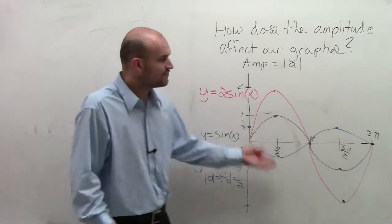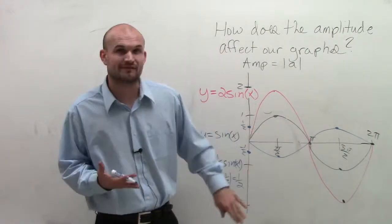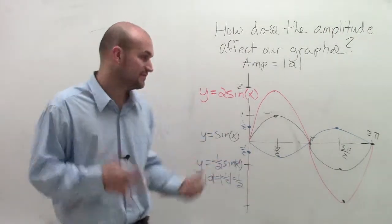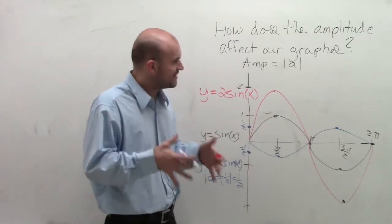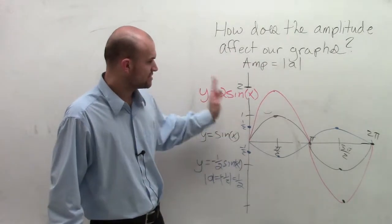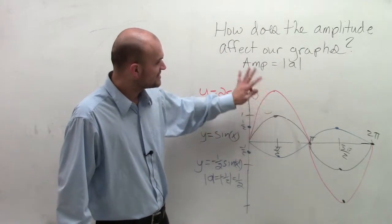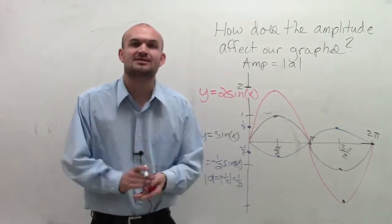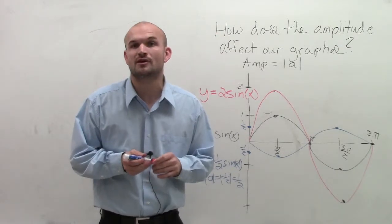So the negative affects the reflection of the graph. It does not affect the amplitude because we take the absolute value of the function. But it's very important that the amplitude, which is your a, your coefficient of your function which multiplies your trig function, does not affect the critical points, does not affect the period. It just affects the vertical stretch or compression of your function.